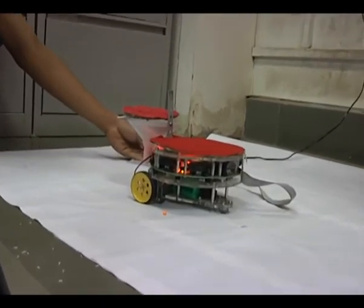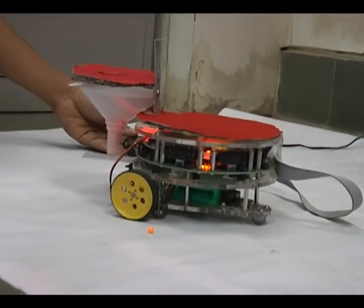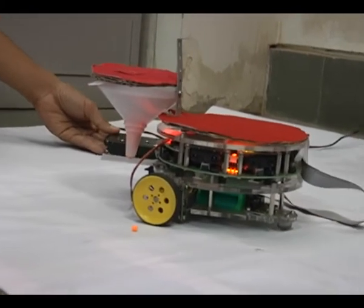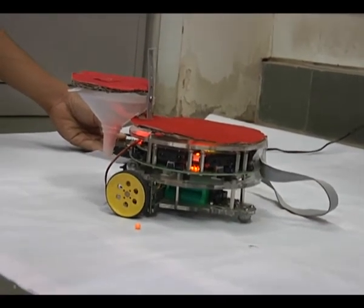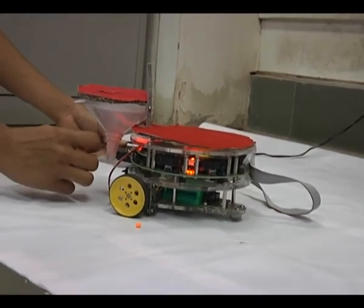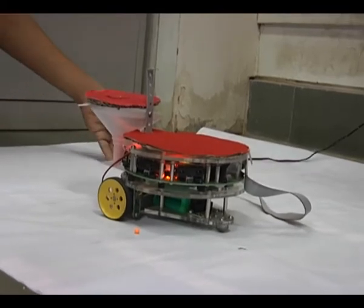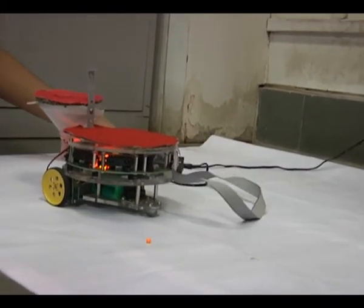It moves on to the next point and keeps on calculating whether it has to rotate or translate. If it is somewhere between 5 degrees of the direction it moves, and if it is within 2 centimeters of the dropping point, it drops the seed.